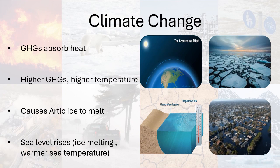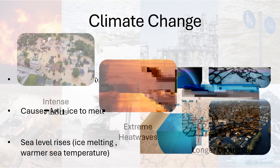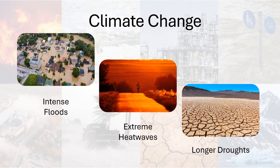Higher temperatures cause more evaporation, resulting in higher precipitation, disturbing the water cycle and leading to floods. Heat waves are stronger and droughts last longer. It causes a domino effect disturbing natural phenomena, and is no longer a myth since we are experiencing longer droughts, more frequent heat waves, and intense floods.